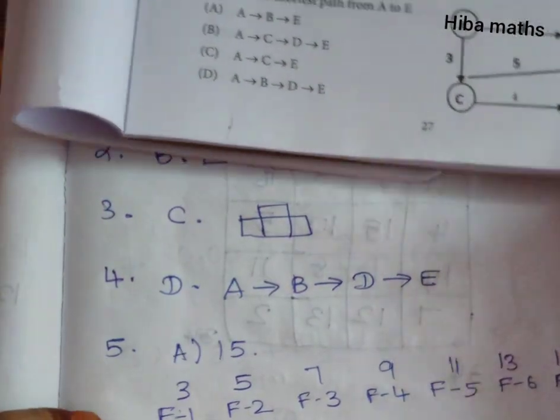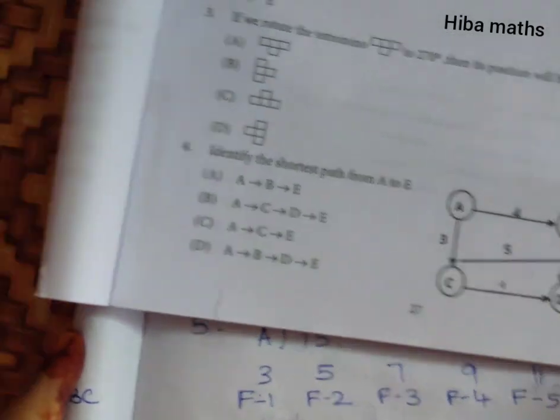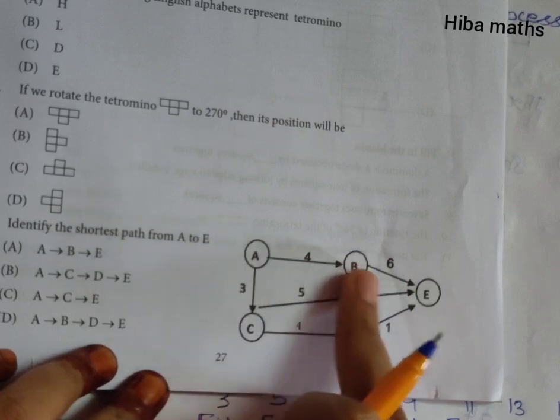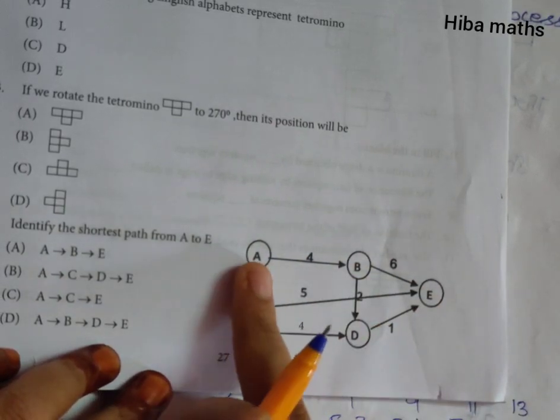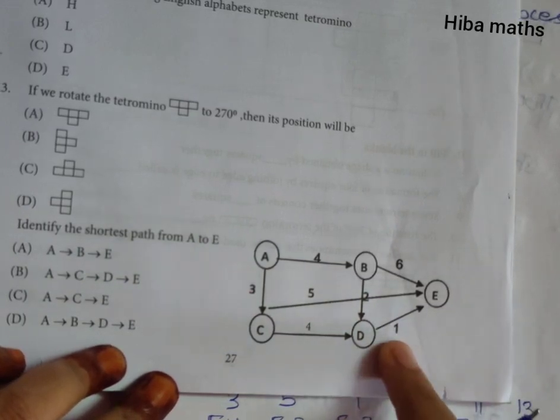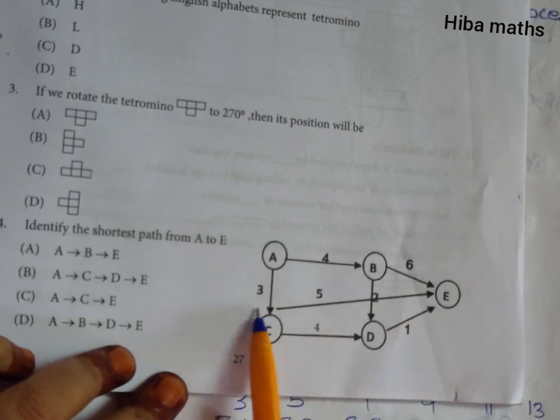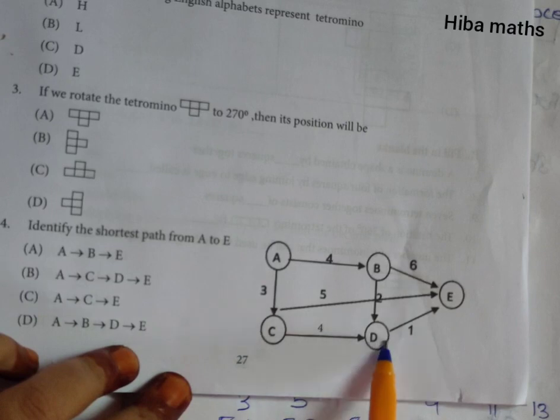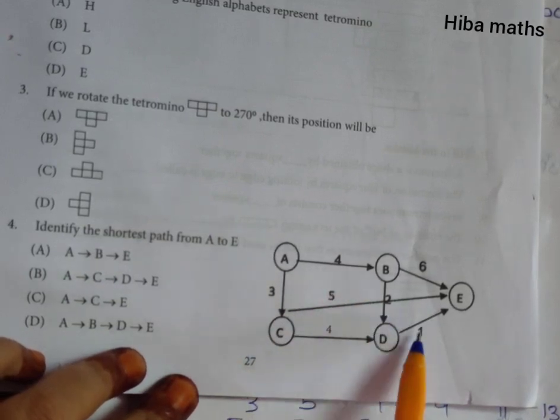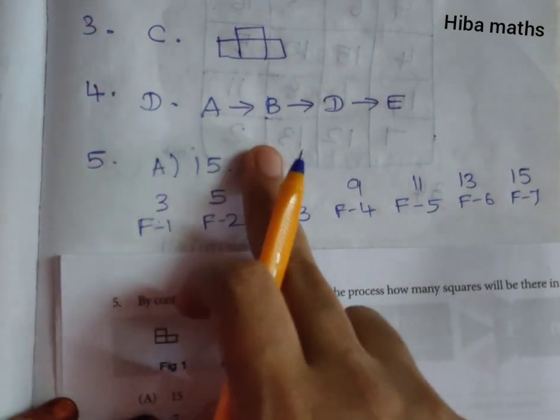This is the 4th question. Identify the shortest path from A to E. We have a diagram of the shortest path. So from A to E, B equals 4, then D will be 4 plus 2 equals 6, now D equals 7. Then A to C equals 3, 5 plus 5 equals 8. A to B, B to D, D to E. So option D, A to B, B to D and D to E.